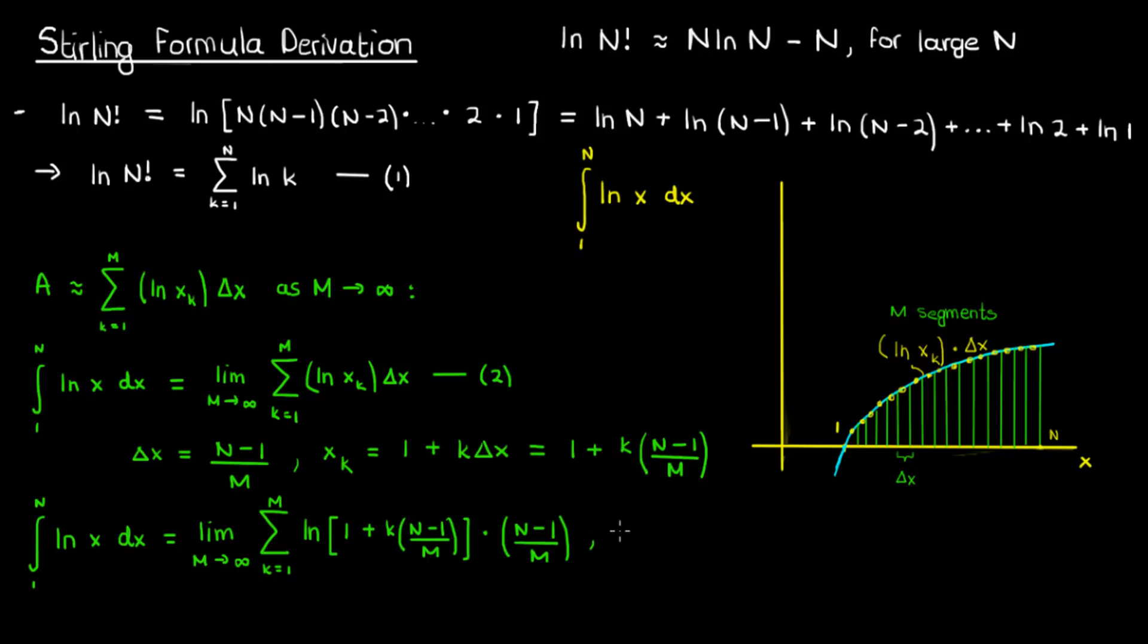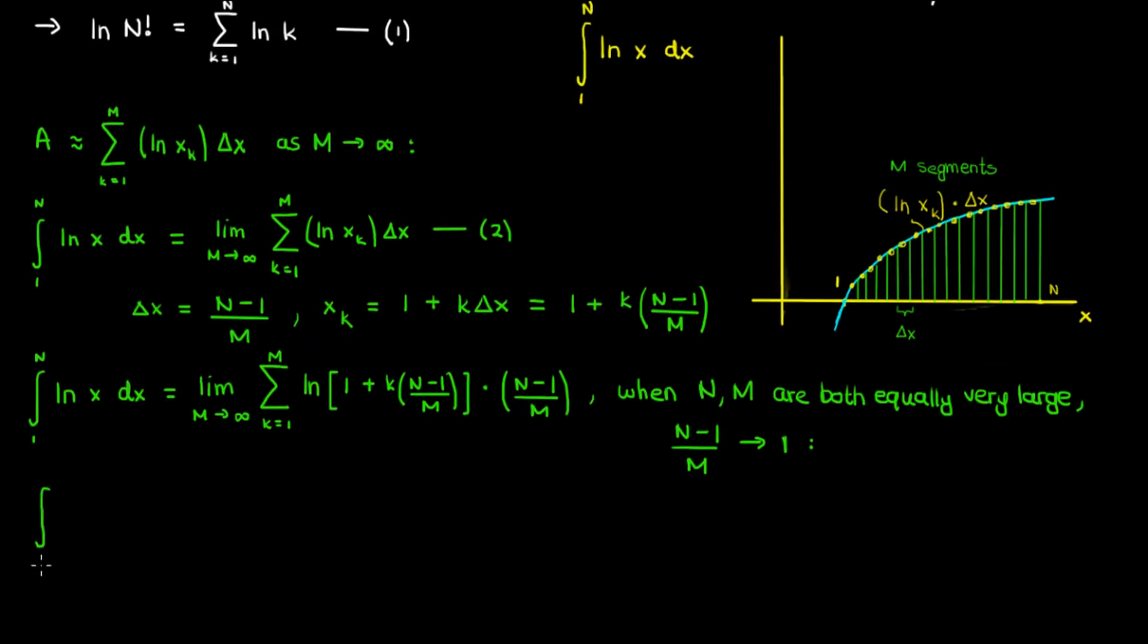But what happens if both capital M and capital N are both equally very large? Well, this capital N minus 1 over capital M term basically just becomes 1, and the capital M at the upper limit of the summation can be replaced by capital N since they're roughly the same.